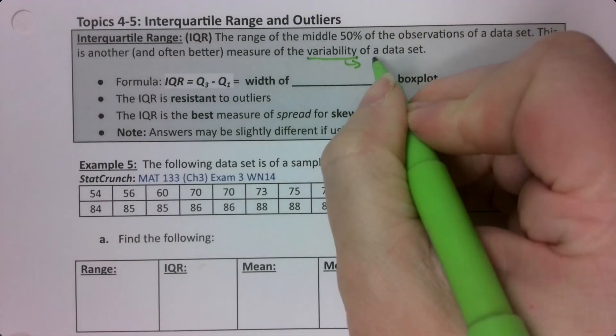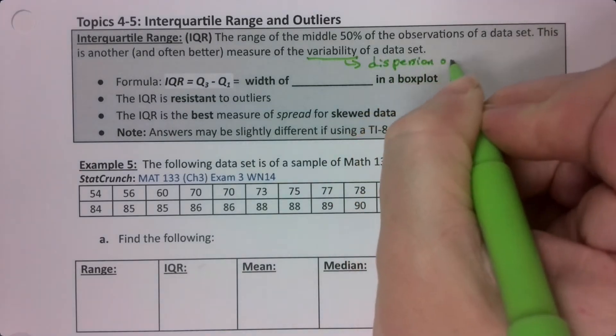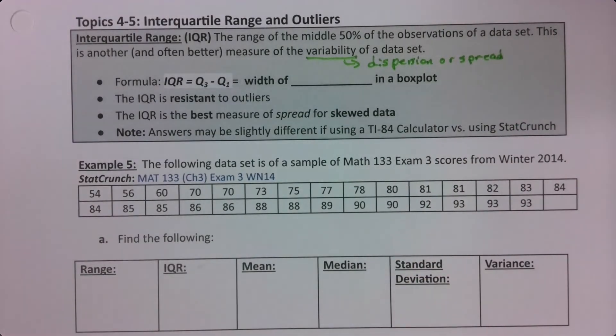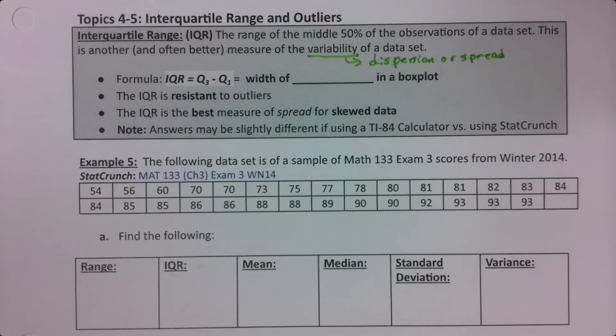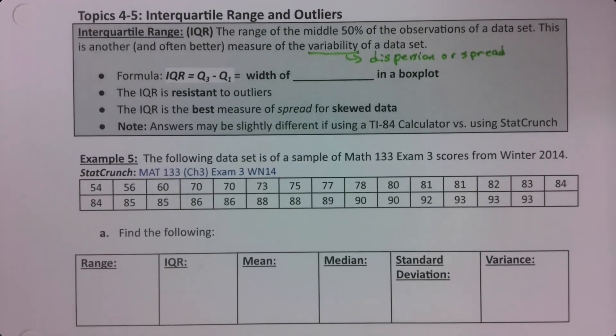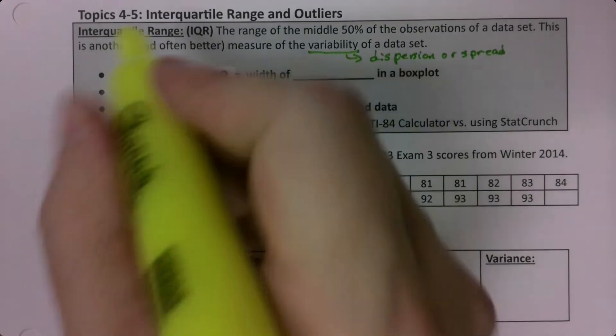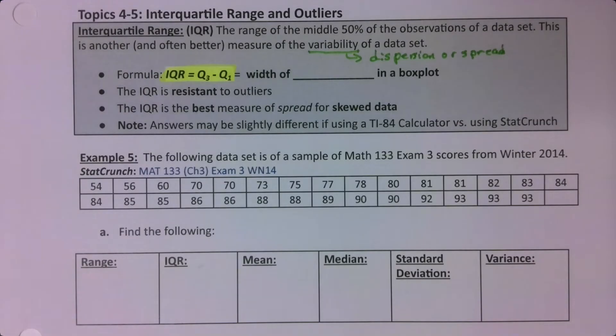Dispersion or spread of your data set. I warned you there was going to be one more measure of spread and now it's here. We've learned range, we learned standard deviation, we learned variance, and now we're learning IQR. Now the formula for IQR is very easy. It's just Q3 minus Q1. That's all there is to it. It's simple as that.